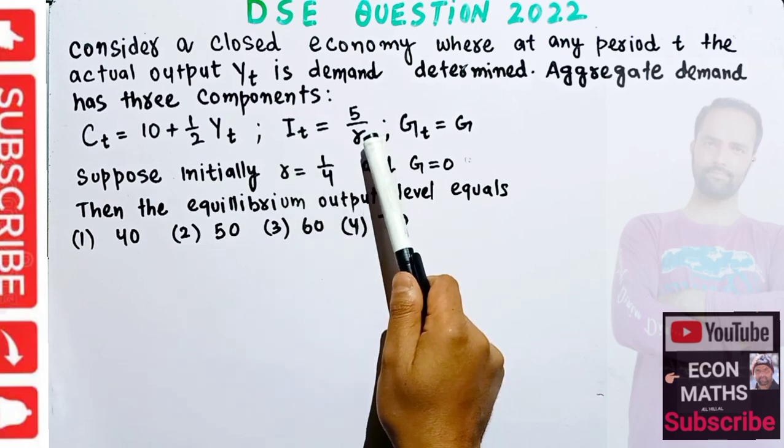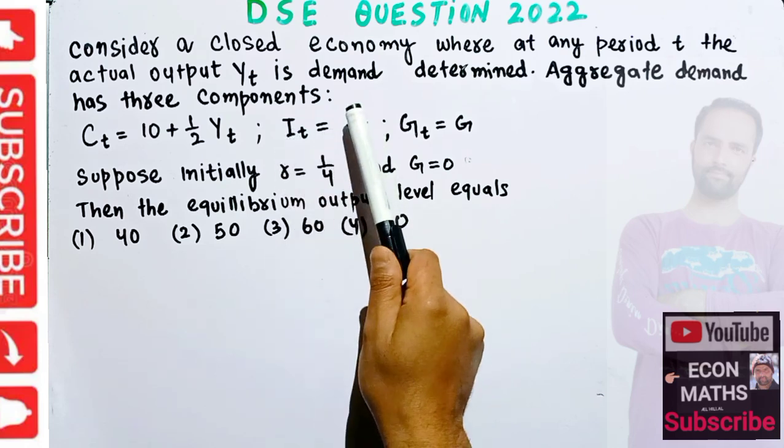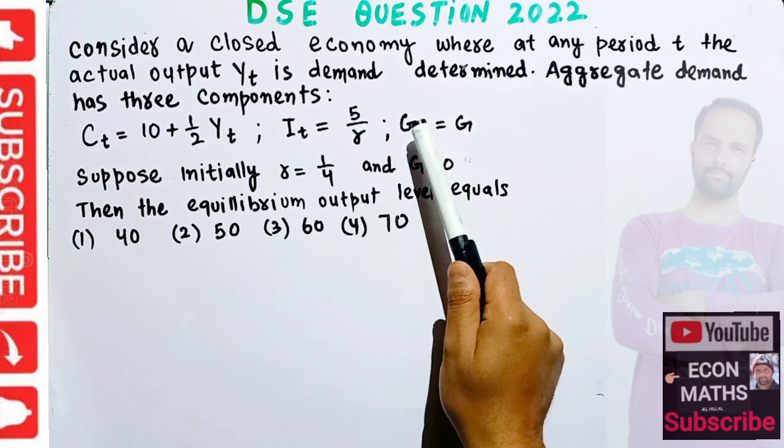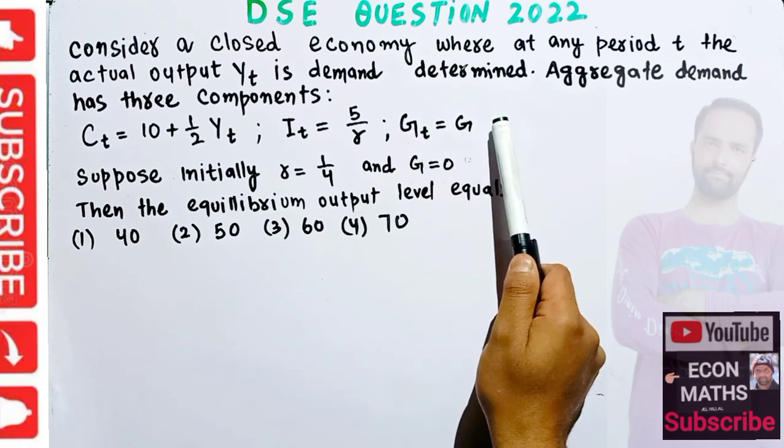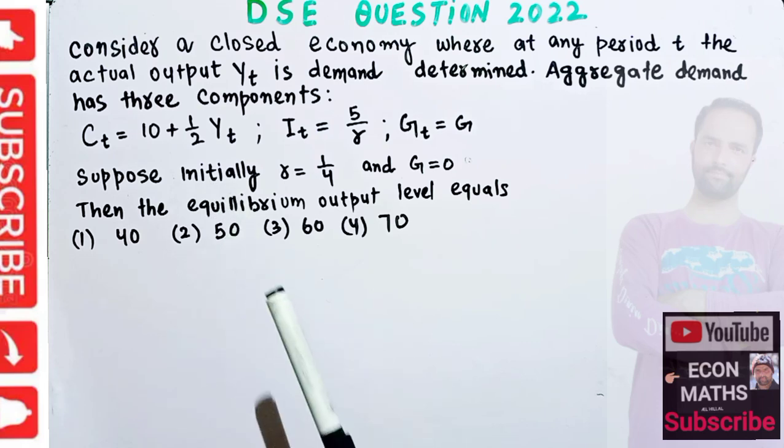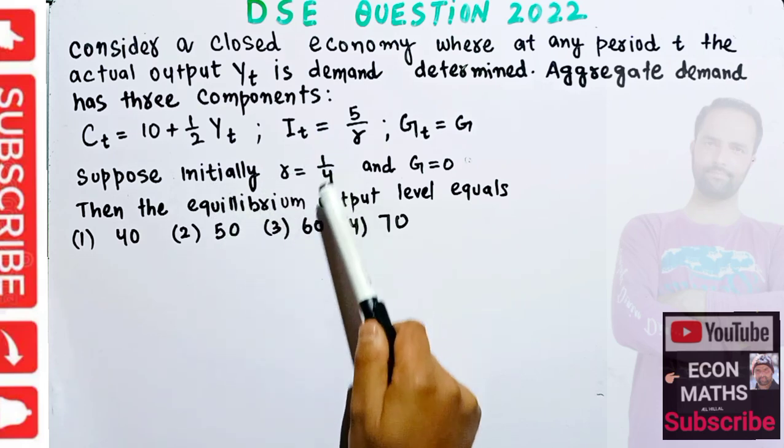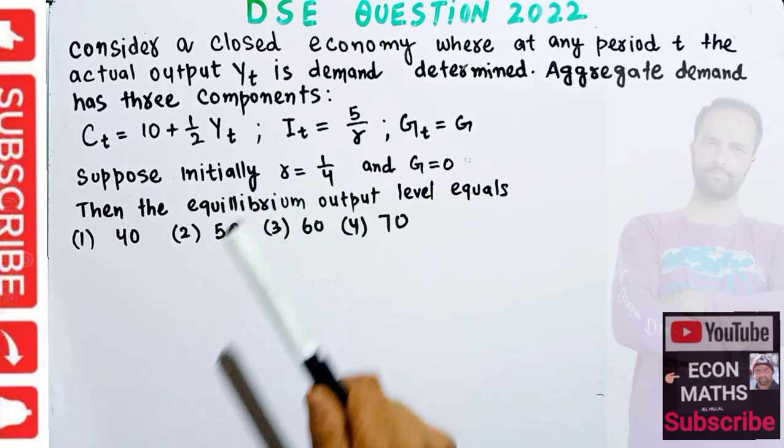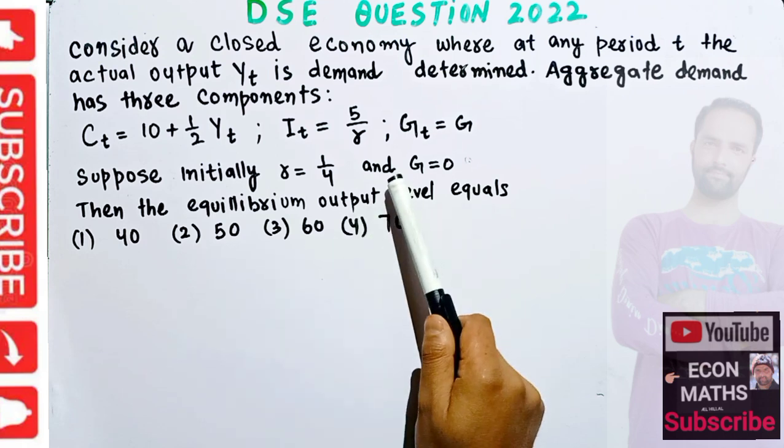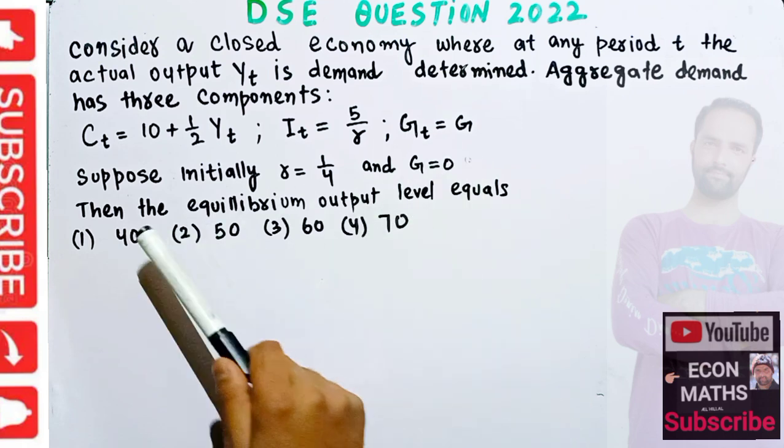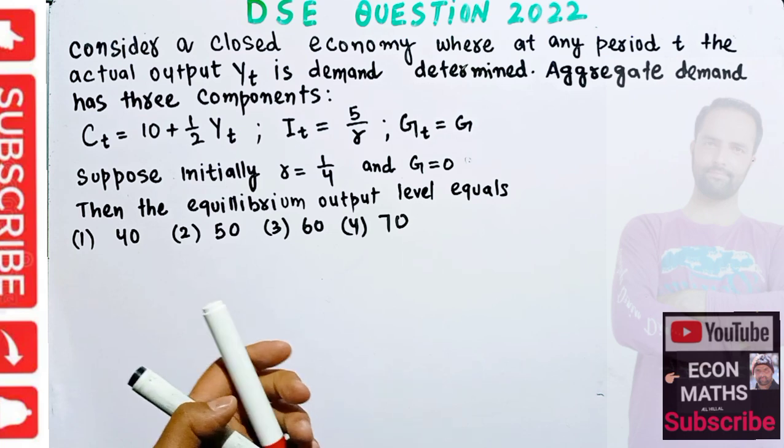Suppose initially the rate of interest r is 1/4, that means 25 percent, and government expenditure is zero. We have to find out the equilibrium output level.